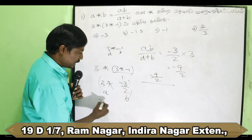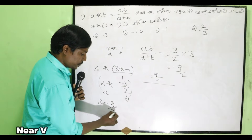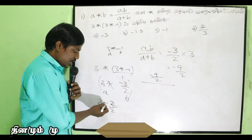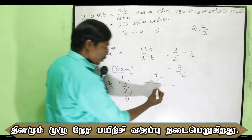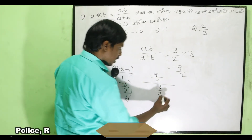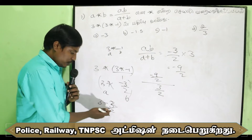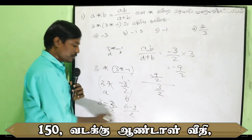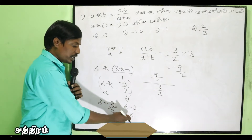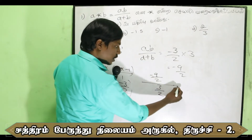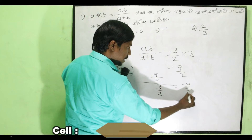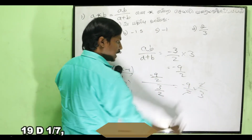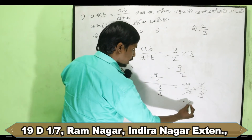Now a plus b equals 3 plus minus 3 by 2. That is 6 by 2 minus 3 by 2, which equals 3 by 2. So the full expression is minus 9 by 2 divided by 3 by 2. The 2s cancel, and we get minus 9 by 3, which simplifies to minus 3. So the final answer is minus 3.